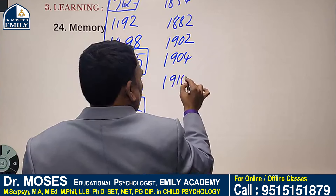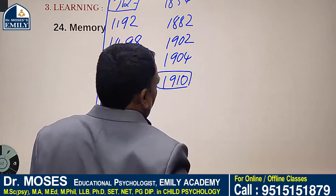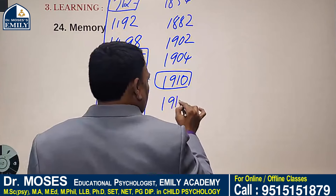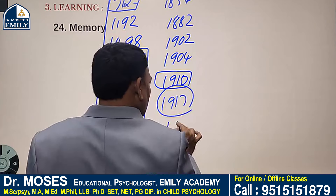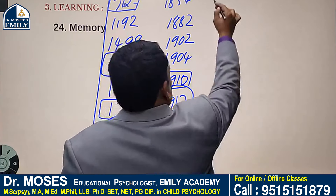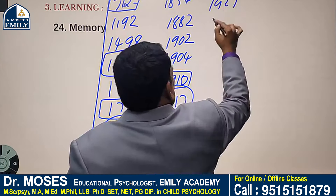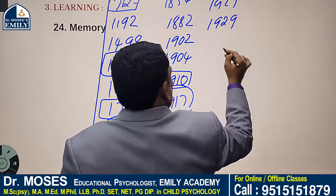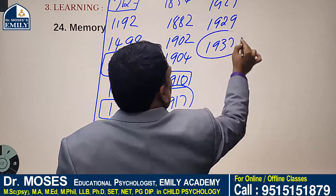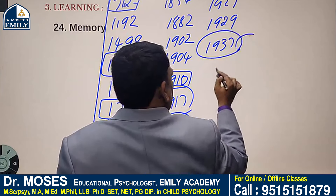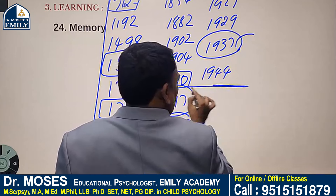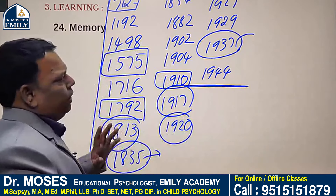1910: Gopal Krishna Gokhale introduced two bills in the Imperial Legislative Council. 1917: Sadler Commission. 1920: Central Advisory Board of Education was started. 1927: Simon Commission. 1929: Hartog Committee. 1937: Abbot-Wood Report. 1937: Basic Education. 1944: Sargent Report. These committees and commissions are related to the British Education System.